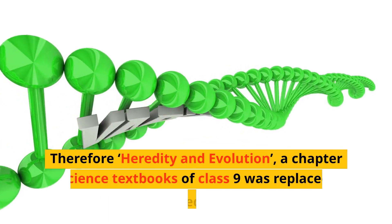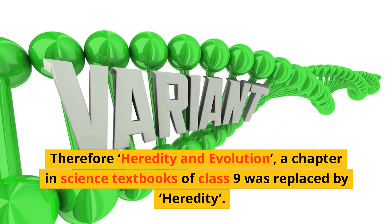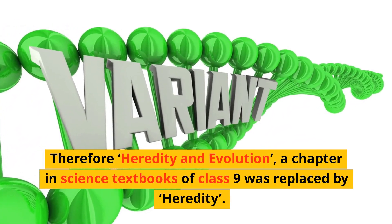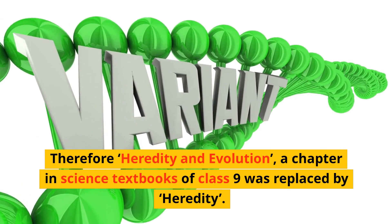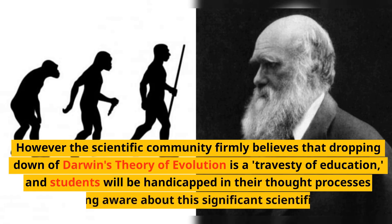As a result, the chapter 'Heredity and Evolution' in science textbooks for class 9 was replaced by just 'Heredity.' However, the scientific community firmly believes that dropping Darwin's theory of evolution is a travesty of education, and students will be handicapped in their thought processes without being aware of this significant scientific discovery.